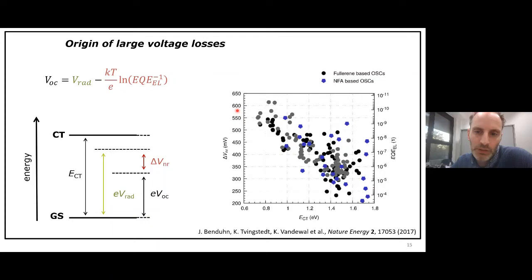Here are the low EQE_ELs. Here are the high voltage non-radiative voltage losses. Here are the low non-radiative voltage losses. This is again for all the fullerene and non-fullerene-based devices we can find. You see a lot of scatter on the data, but a clear trend. You see that the lower the CT state energy, the higher the non-radiative voltage losses, or the worse, the more non-radiative decay and the lower the EQE_EL.